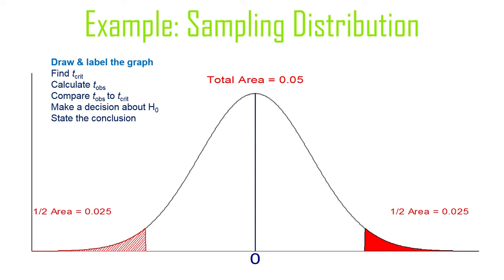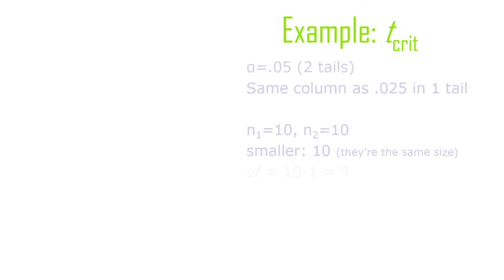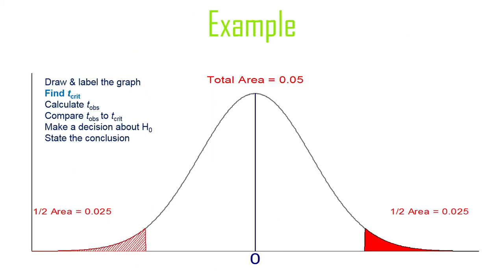Here's a graph — two-tailed, alpha equals .05, same as all the other graphs we've done. Looking up t-critical: alpha equals .05 with two tails gives us a critical value of 2.26 with nine degrees of freedom. There are ten individuals in each group, so ten minus one for each group — the smaller of those two is nine. So plus and minus 2.26 is our t-critical. Now all we have to do is calculate a t-observed using the formula.